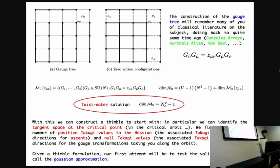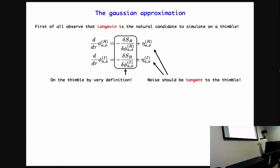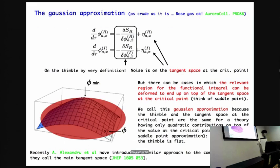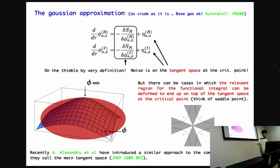But we know everything. Now just a little intermezzo. Langevin is in principle a good simulation algorithm for the thimble. Why? Because the drift takes you on the thimble by definition. But you need to extract noise on the tangent space. This can be difficult. It can be very easy if the relevant region of the functional integral can be deformed to end up on top of the tangent space at the critical point, which is connected with what Paolo was also telling before.